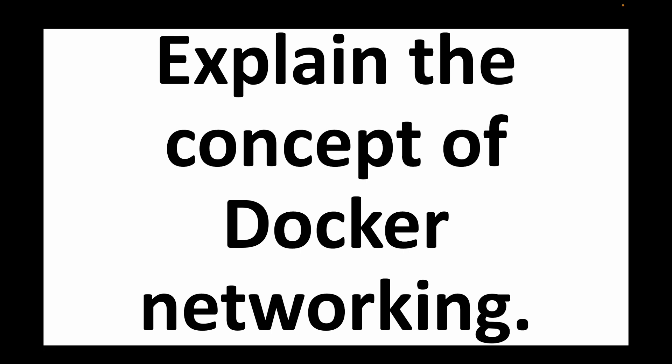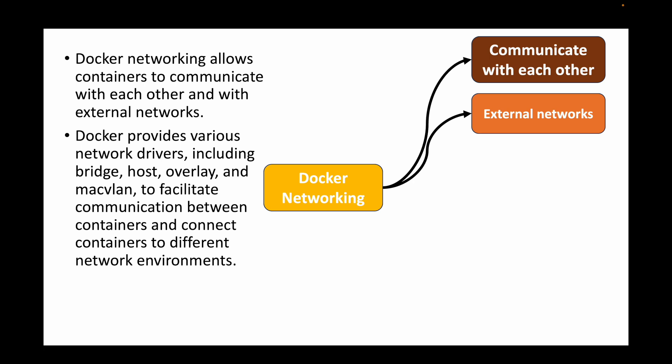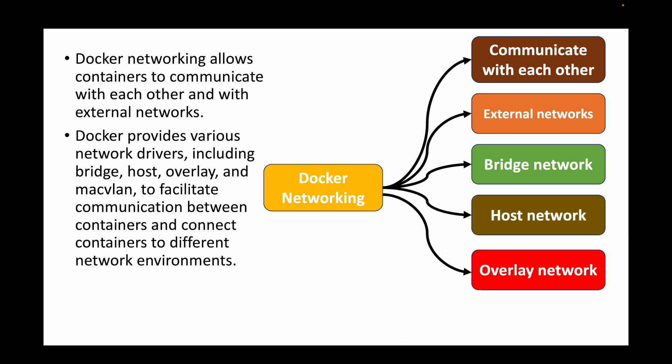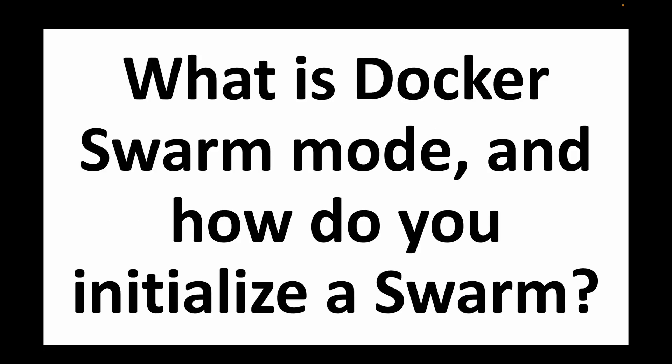The next question is: explain the concept of Docker networking. Docker networking allows containers to communicate with each other and with external networks. It provides various network drivers, including the bridge network, host network, overlay, and macvlan. These different network types facilitate communication between containers and connect them to different network environments. By default, containers are created in the bridge network, which allows containers to communicate with each other.